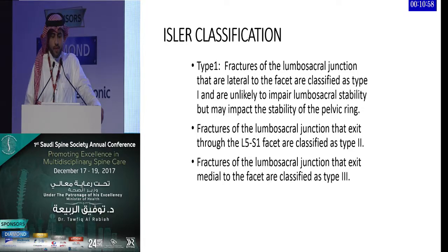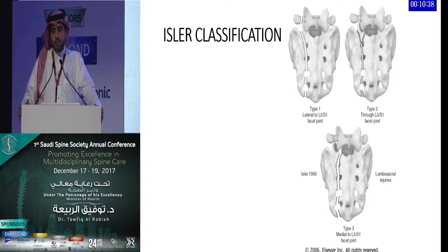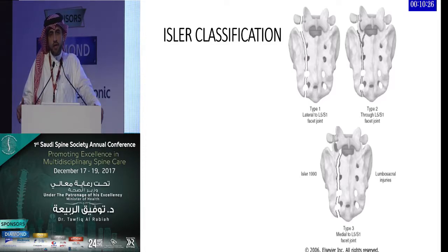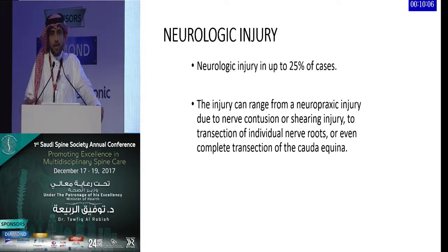The Isler classification is based on the location of the major fracture relative to the L5-S1 facet, which is a major stabilizer at the lumbosacral junction. Type 1 fractures are lateral to the facet — stable spinally but unstable for the pelvis due to vertical shear. Type 2 goes through the facet, and Type 3 is medial to the facet, with increasing instability. A transverse or chance-type fracture through L5 is highly unstable, involving the spine and risking nerve root injury.